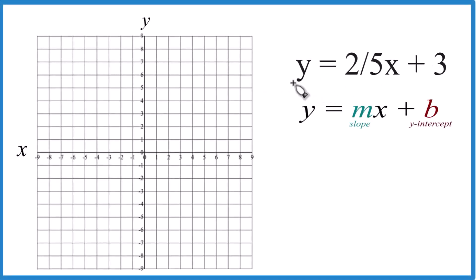Let's graph the equation y equals two-fifths x plus three. We're going to use slope-intercept form. That's often a lot easier when you have a fraction here as your slope. You can use a table of values and you'll get the same answer.